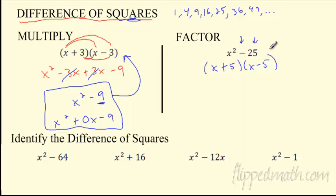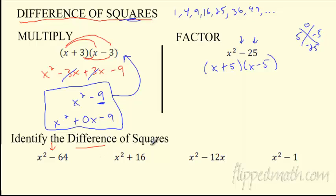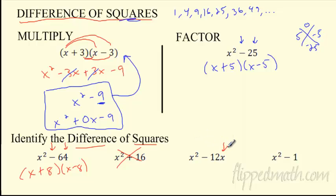Using the magic X: what multiplies to negative 25 and adds to 0? It's +5 and −5. Of these examples: x²−64 — yes, it's a difference of squares since 64 = 8×8, so x+8 times x−8. x²+64 — no, because it's a plus sign, not subtraction. x²+4x−12 — not a difference of squares; there's an extra x term, and 12 is not a perfect square. You could factor an x out of a binomial like that — greatest common factor.